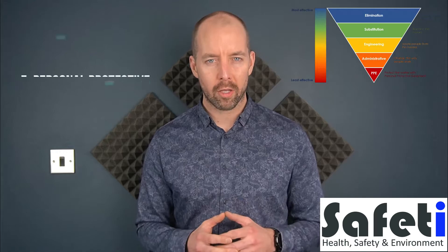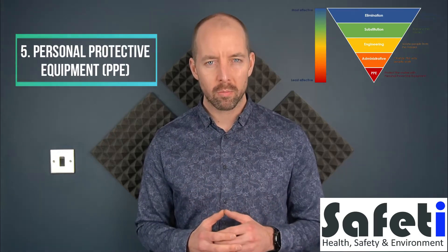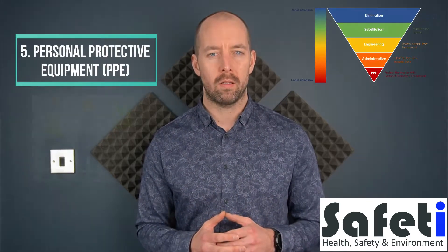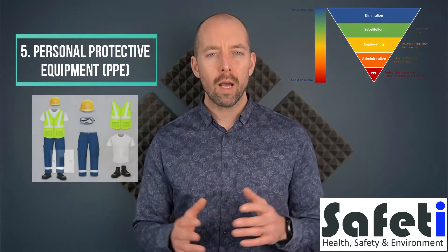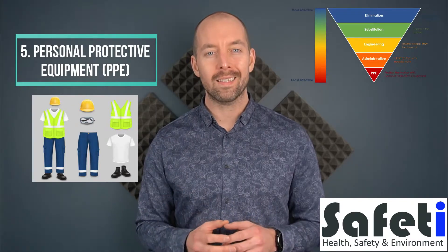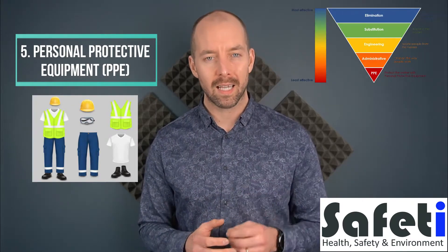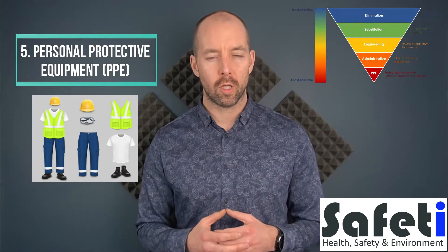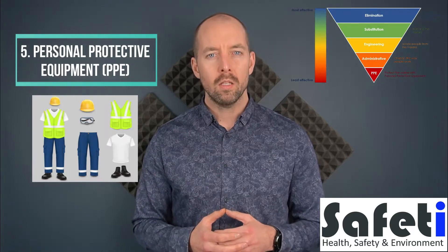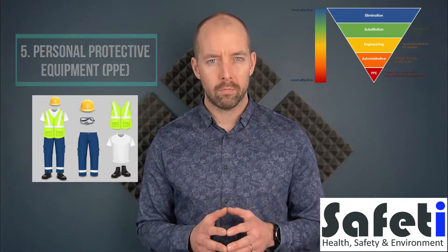We've reached the fifth and final option when it comes to the hierarchy of control, and that is personal protective equipment — otherwise known as PPE. It's regarded as the least effective and the last line of defence when it comes to controlling risk, so it's not something we want to depend on.